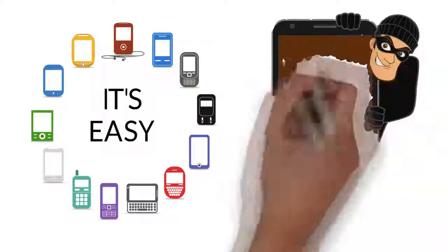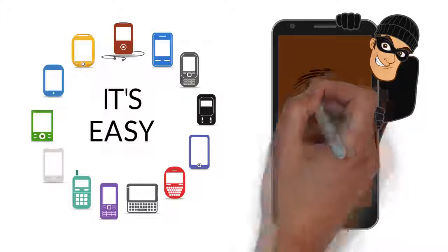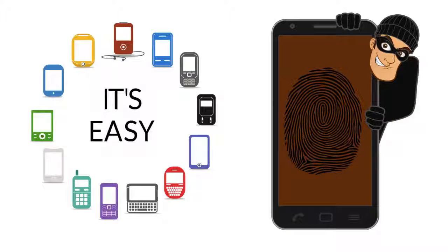If a thief takes a family member's phone and tries to access it, a stealth camera shot of their face is immediately taken. Fingerprints are available too.